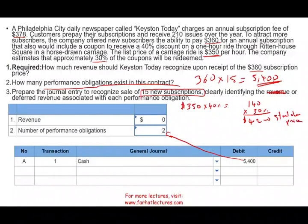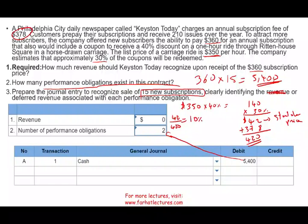The standalone price for the newspaper subscription is $378. So the total standalone value is $378 plus $42, which gives us $420. We allocate based on this $420 total. The coupon is $42 divided by $420, which represents 10% of the transaction. The newspaper subscription is $378 divided by $420, which represents 90%. Now we are ready to record the transaction. Be careful — you don't credit revenue here because there is no revenue yet. Instead, you credit two separate deferred revenue accounts: deferred subscription revenue at 90% of $5,400, which is $4,860, and deferred coupon revenue at 10% of $5,400, which is $540.